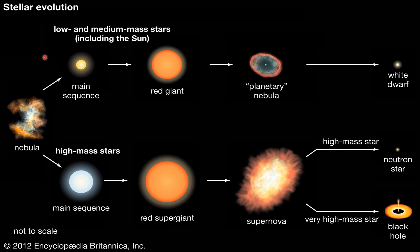The third terminology is stellar evolution. This representation gives you an idea of how a star forms. We have two main types of stars: low and medium massive stars, and high massive stars. Both start from a nebula and become a main sequence star. Low/medium stars become a red giant, then a planetary nebula, then a white dwarf. For high massive stars, from nebula to main sequence star, then a red supergiant, supernova, and then either a neutron star or, for very high massive stars, a black hole. On every stage of stellar evolution, different processes involve the formation of heavier elements.